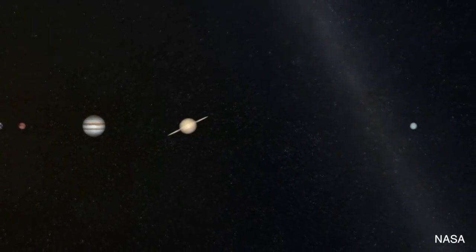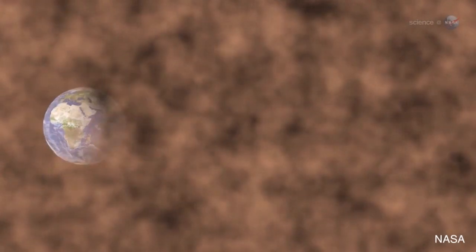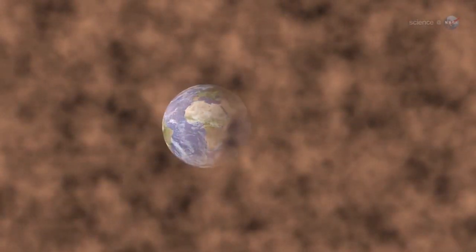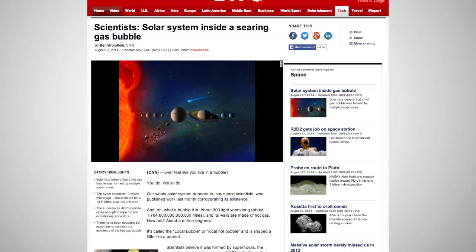Space scientists recently discovered that our solar system exists within a bubble, a gigantic space bubble made up of hot gas. The peanut-shaped bubble is known as the local bubble, or a local hot bubble.